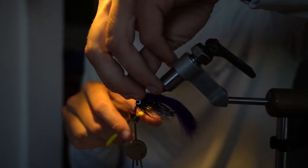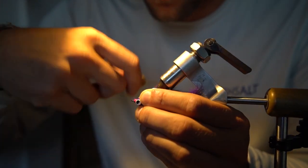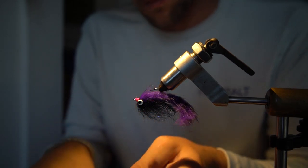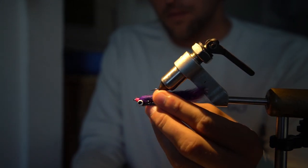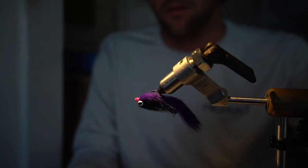Once I get it tied in I'm going to pull that tag of the hide as tight as I possibly can and cut it as close to the thread wraps as I possibly can without cutting them. Once I cut the excess off I'm going to whip finish and just glue it up and that's the fly right there.